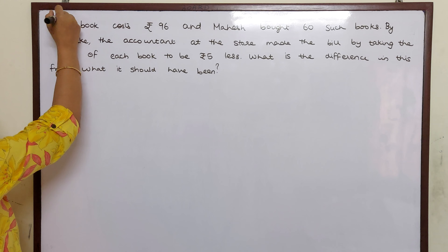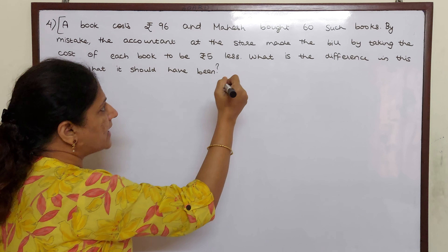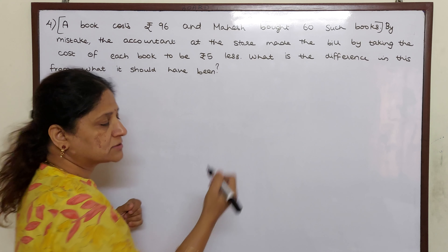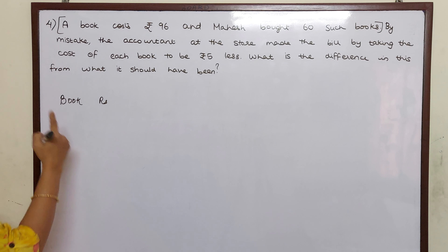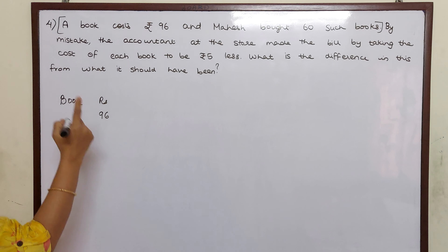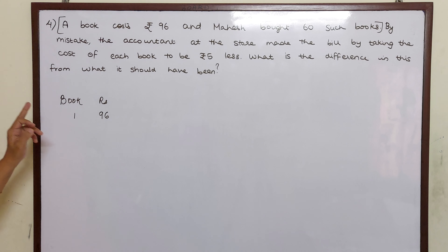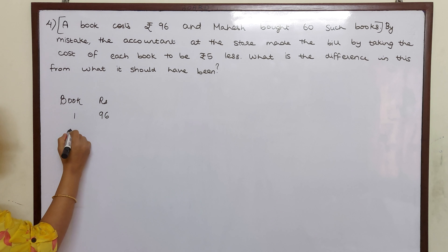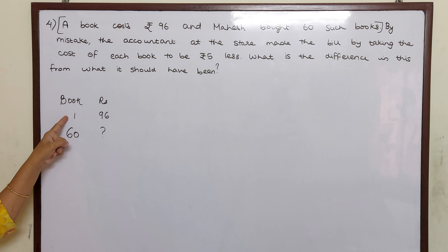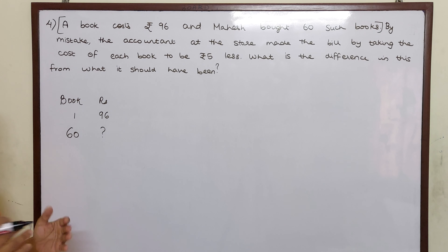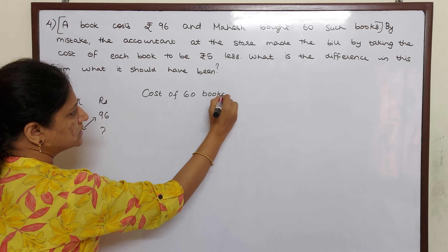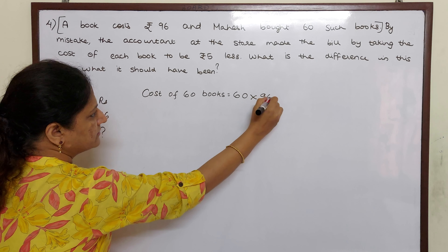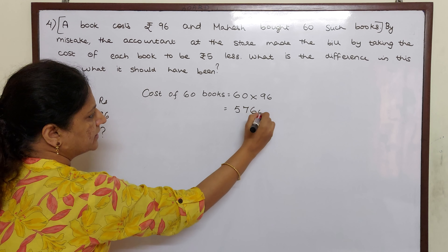Let us break the sentence, children. A book costs rupees 96 and Mahesh bought 60 such books. So let us write: the cost of one book is 96 rupees and Mahesh bought 60 books. The information for one is given and they have asked for many, so it is the case of cross multiplication. The cost of 60 books equals 60 into 96, which will be 5,760 rupees.